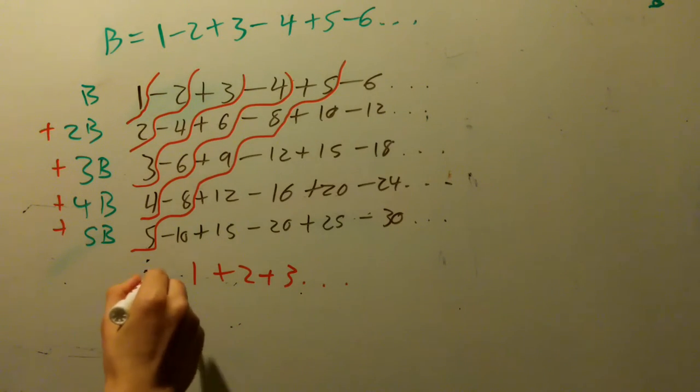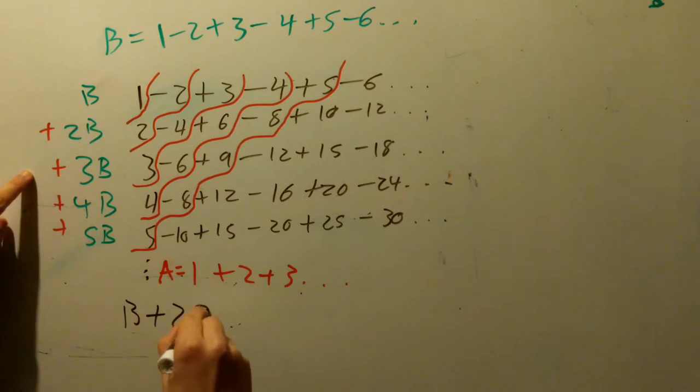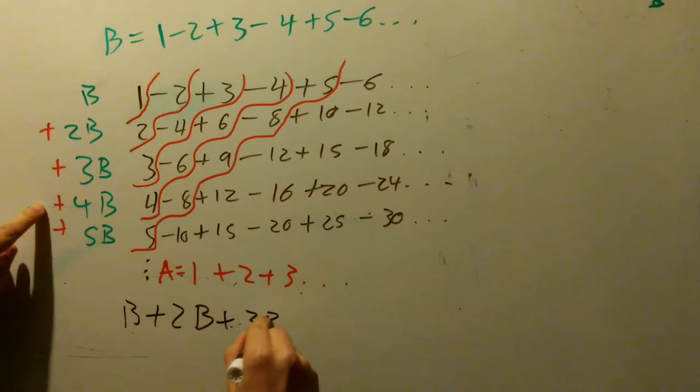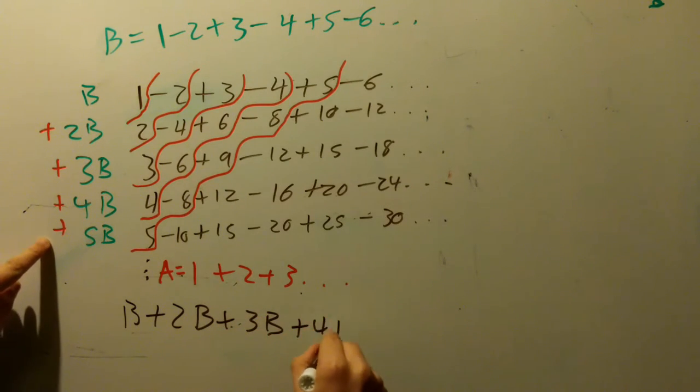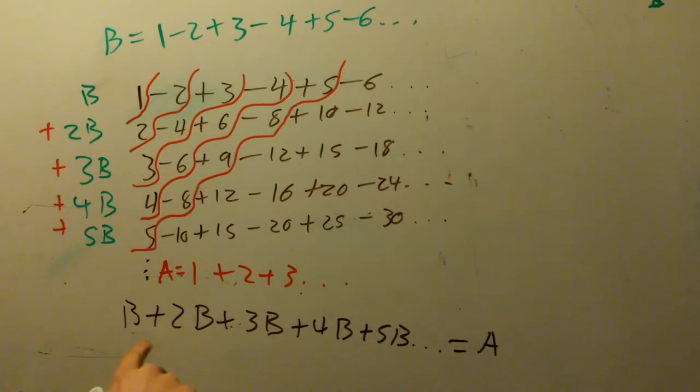And we'll call this A. At this point, we can say that B plus 2B plus 3B plus 4B plus 5B, etc., is equal to A. And then we'll notice we can take out B here. This gives us 1 plus 2 plus 3 plus 4, etc., is equal to A. So then we get B, A is equal to A.